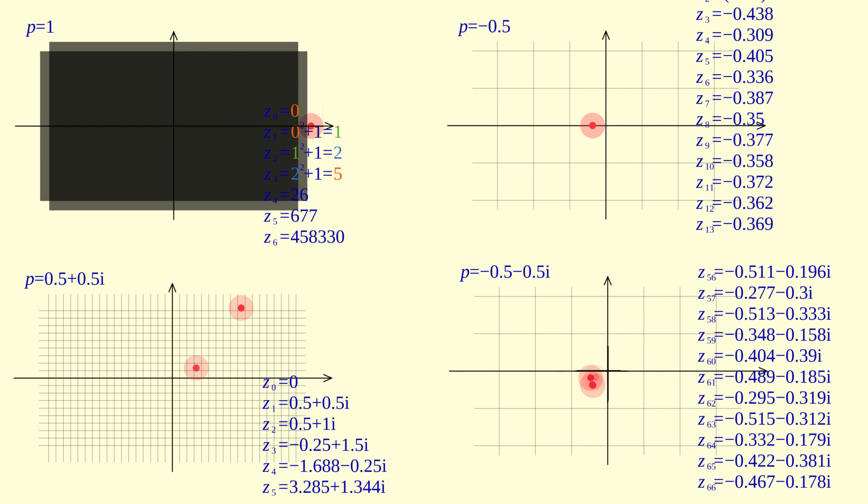Now consider a set of all values of parameter p for which the absolute value of Zn doesn't tend to infinity. This is the well known Mandelbrot set.